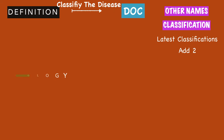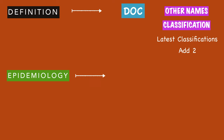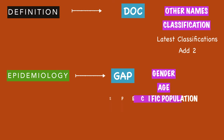The second heading is epidemiology. Under epidemiology, remember the mnemonic GAP — G for gender, A for age, and P for the specific population in which the disease is most common. That covers the first two headings.